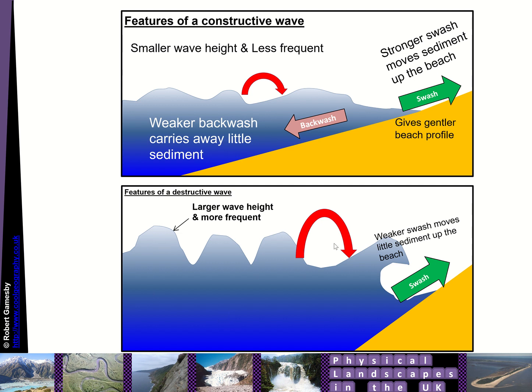And then on your destructive waves, larger wave height and more frequent, weaker swash moves a little sediment up the beach. And a strong backwash carries away lots of sediment. So that would give you a steeper beach and we might get a steep angle of strike as we saw with those previous waves that scours lots of material away.